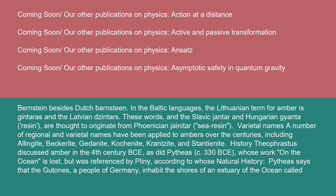Varietal names: A number of regional and varietal names have been applied to ambers over the centuries, including Alangite, Beckerite, Gedonite, Coconite, Krantzite, and Stantionite.